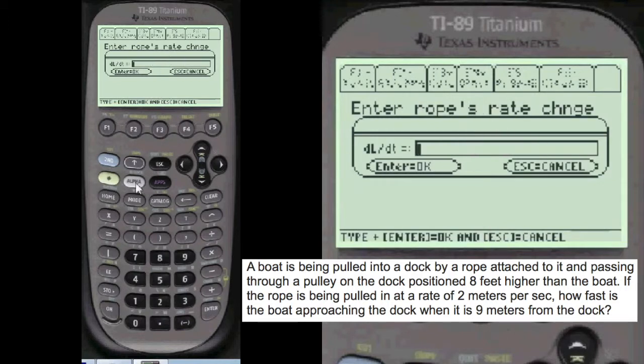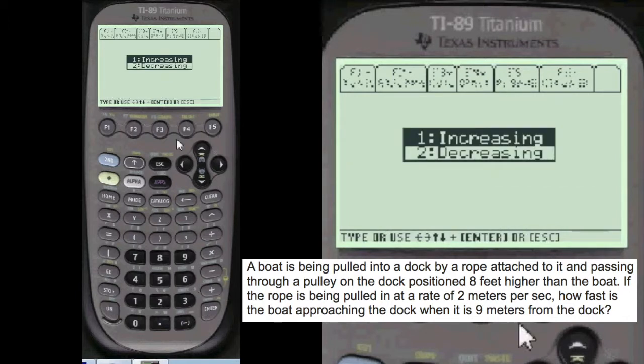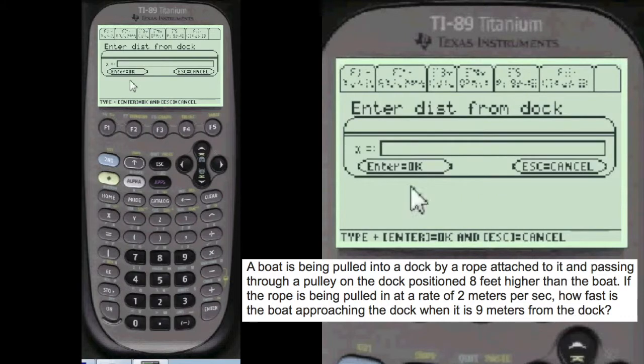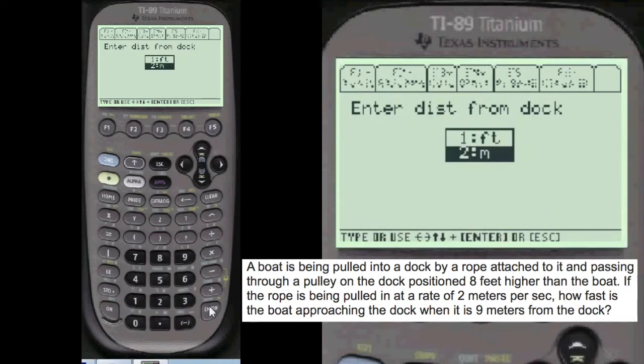The rope's rate of change is equal to alpha 2 meters per second. It's decreasing because it's going closer to the y-axis. It's pulled in.